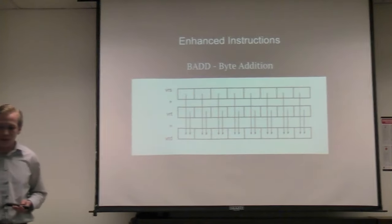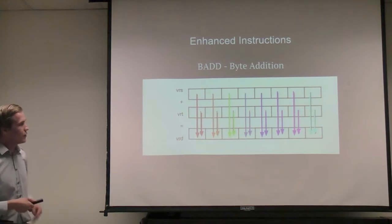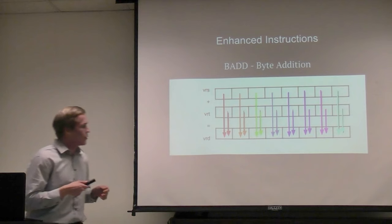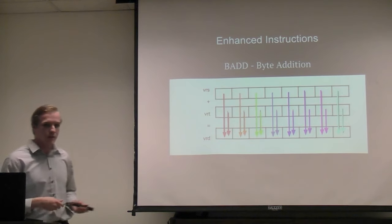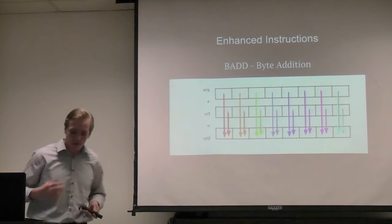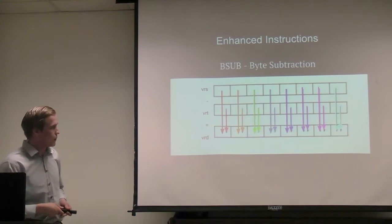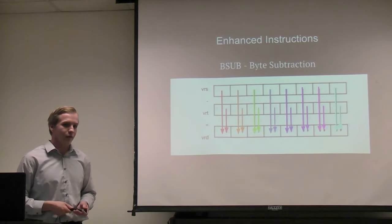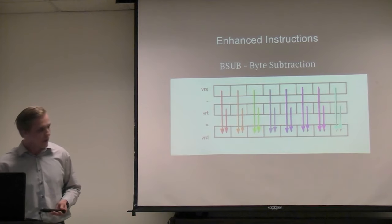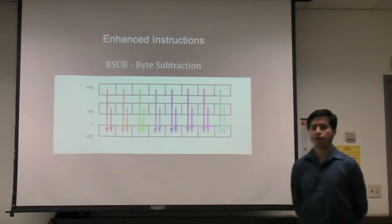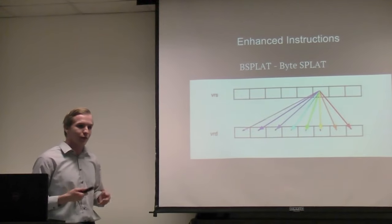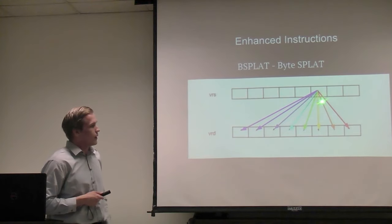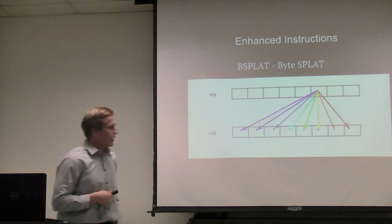For 8-bit operations: byte addition splits the 64-bit value into 8 bytes and does individual addition for each byte, storing the result into the respective byte of the destination register. B-sub is very similar but with subtraction. Both of these operations are unsigned — we don't have flags for signed operations yet, though we'd like to add them via software-handled flag handling. For V-splat, the element field from the format selects a specific byte element and replicates it throughout the destination register.